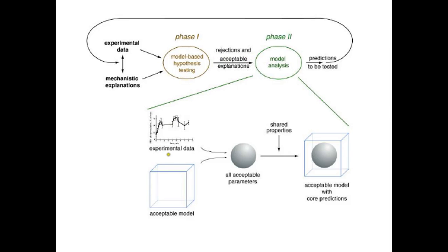A core prediction is a shared property among all acceptable parameters. You have some experimental data and an acceptable model, and then you find all acceptable parameters — not all parameters, but only those that can describe the data you had at the beginning. When you look for predictions, you look for predictions that are the same, or at least sufficiently the same, for all of these parameters.